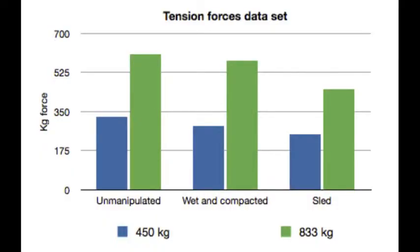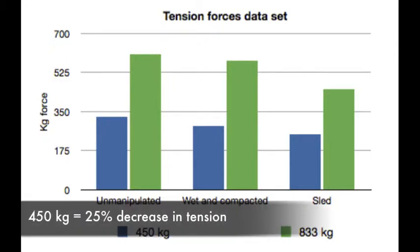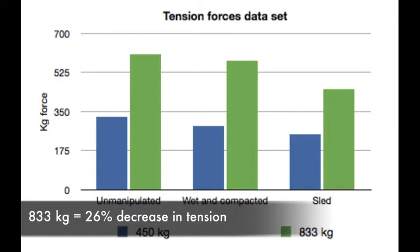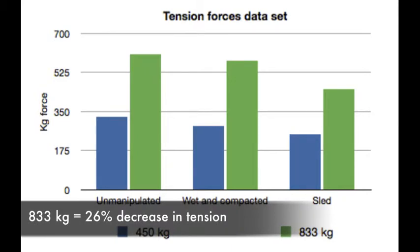When the sled tension results are plotted against the control and compaction tests, a further decrease in force is seen. This time the 450kg weight experienced 25% less tension than the control, and the 833kg test experienced 26% less tension.